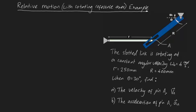Omega naught is going in the clockwise direction. We're also given some dimensions: 250 millimeters and 400 millimeters. When theta is equal to 30 degrees, we're asked to find the velocity of pin A — that is the objective of this video. In the next video I'm going to be solving the second part: find the acceleration of pin A.